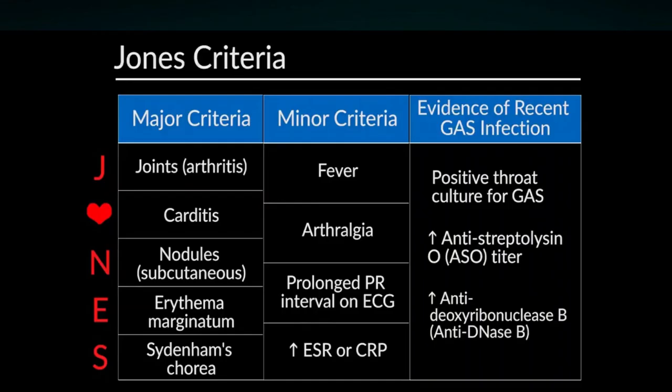Diagnosis uses two criteria: Major Criteria and Minor Criteria. The major criteria include joint affection, cardiac affection, nodule formation, Erythema Marginatum, and Sydenham's Chorea. The minor criteria include fever, arthralgia, elevated ESR, elevated C-Reactive Protein, and a prolonged PR interval on ECG.